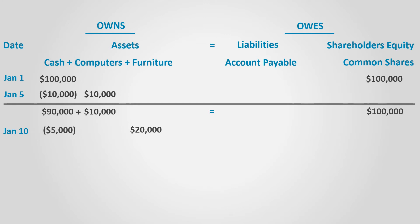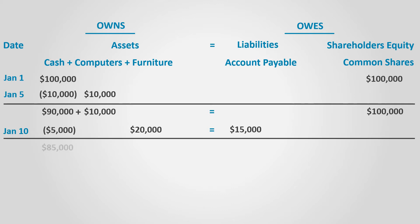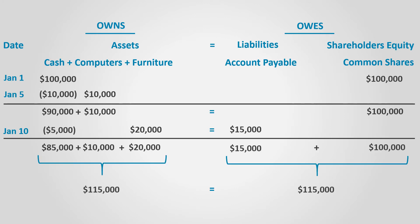The net change in assets is $15,000. On the other side, the business owes $15,000 to the office furniture vendor. Since the office furniture vendor is not one of the shareholders, it is classified as a liability — specifically an account payable. Always remember that payable is a liability since the business will pay in the future. Total assets is equal to total liabilities and shareholders' equity, which in this case equals $115,000.